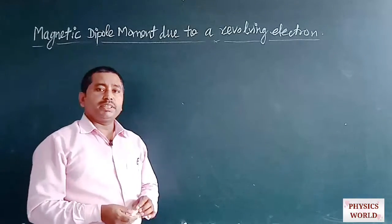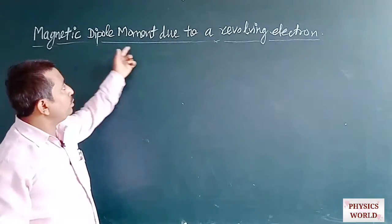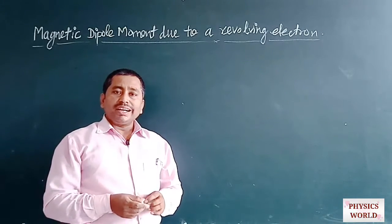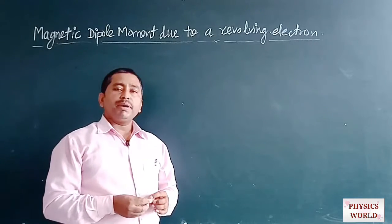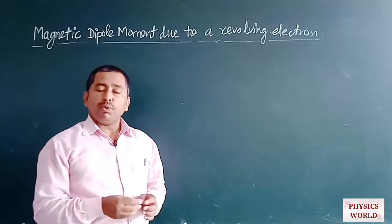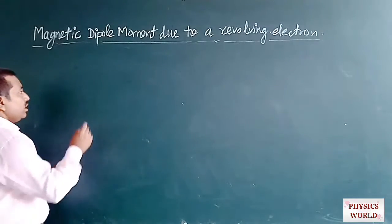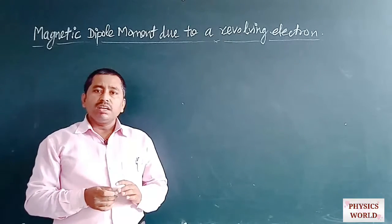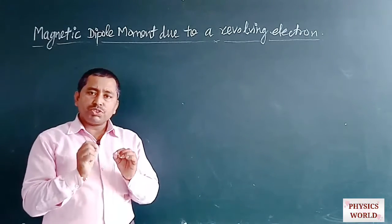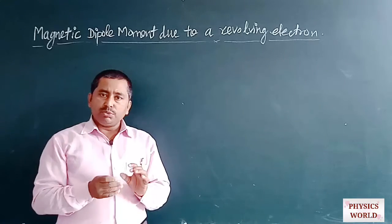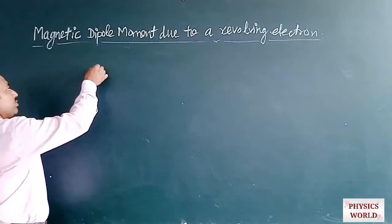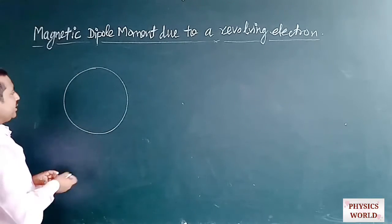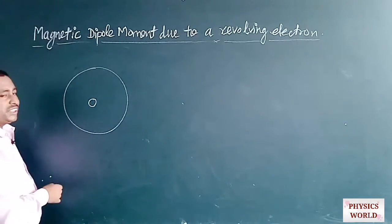Let us start our discussion about magnetic dipole moment due to a revolving electron. According to Bohr's postulates, given by Danish physicist Niels Bohr in 1913, every electron that is a negatively charged particle revolves around a positive charge present in the nucleus, which is very small in size. Suppose this is the orbit of the atom and here is the positively charged nucleus.